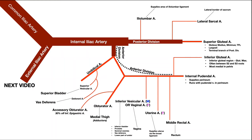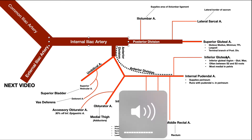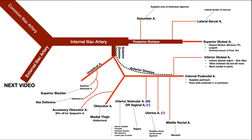Welcome back to Anatomy and Physiology on Catalyst University. My name is Kevin Tokoff. Please make sure to like this video and subscribe to my channel for future videos and notifications. In this video we're going to be discussing the blood supply that ultimately originates from the internal iliac artery. We'll see a lot of branches, and I've indicated what specific structures are supplied by those vessels.